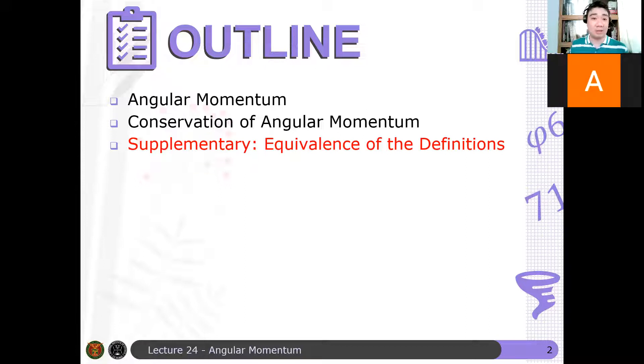I suggest you watch the supplementary discussion. There's a more formal way to say that if for a rigid body, pwede mong isipin yun na sum of particles, it turns out that the definition of angular momentum for a rigid body and a particle are equivalent.